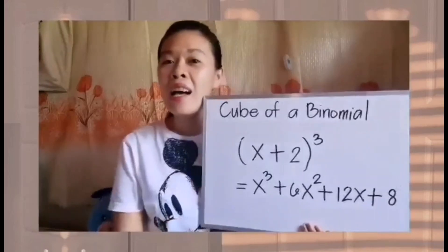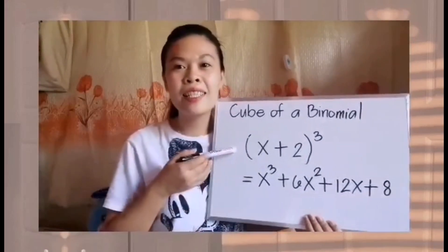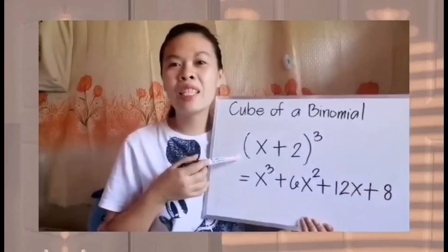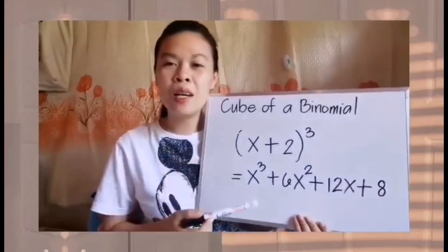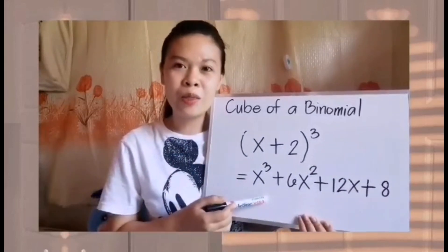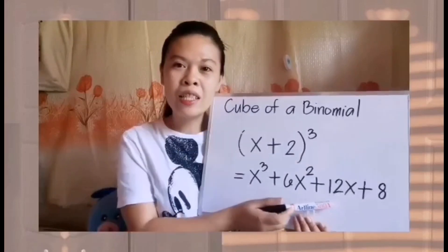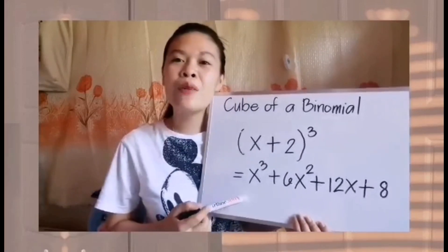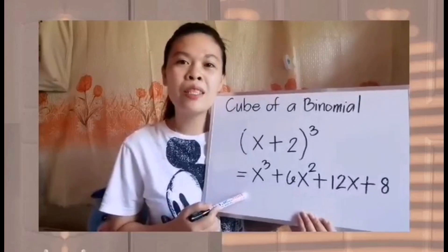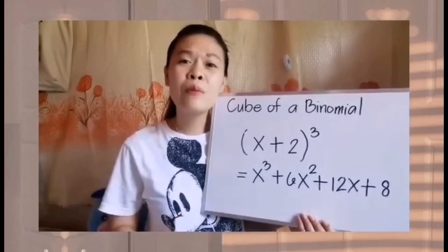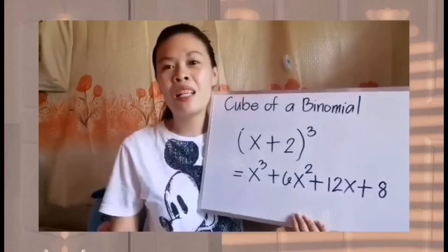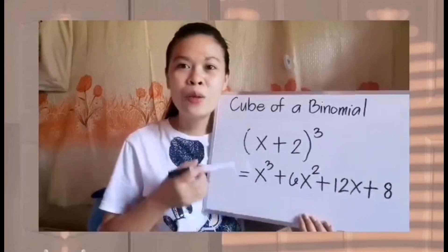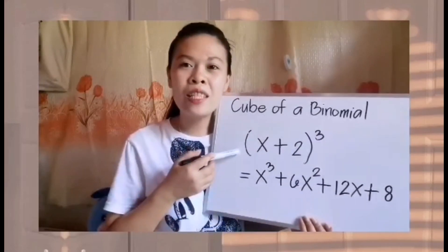Let us now have the answer of our first example. The cube of the quantity of x plus 2 equals x cubed plus 6x squared plus 12x plus 8. So as you can see in our answer, we have 4 terms. Meaning to say, there will be 4 easy steps for us to follow in order to get the answer. So what is the first step?